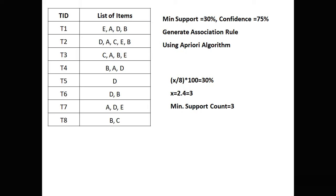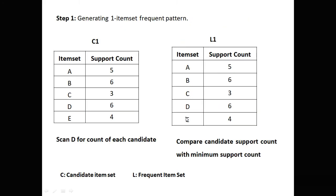Second example: 8 transactions are given, minimum support is 30%, and confidence is 75%. Generate the association rule using the Apriori Algorithm. Total 8 transactions constitute 100% support. To find the minimum support count: x divided by 8 into 100 equals 30, giving x equals 2.4. Since we can't use 2.4, we round up to 3. So the minimum support count here is 3.